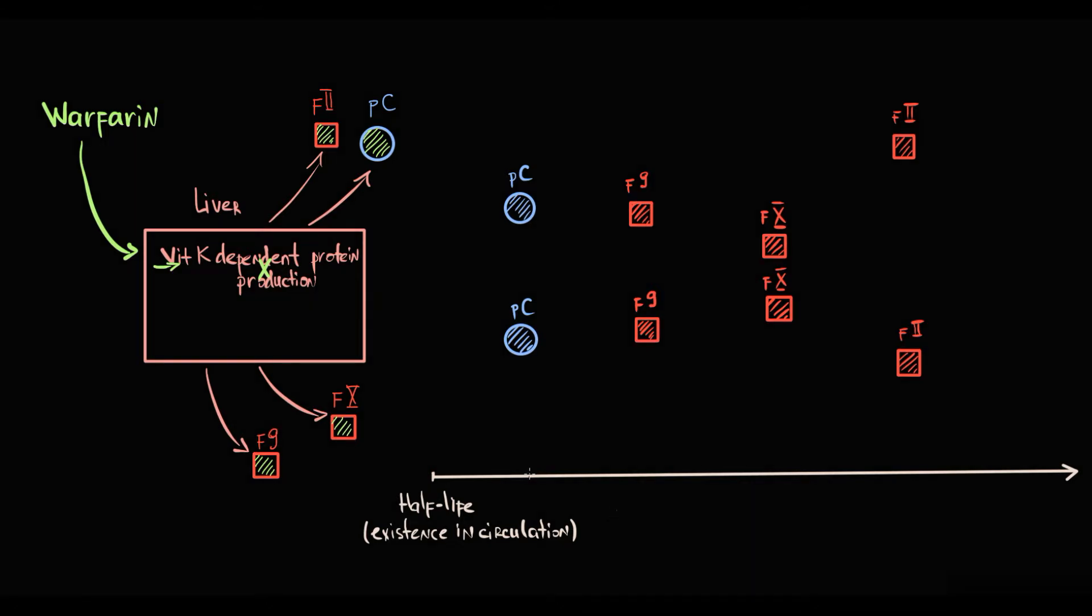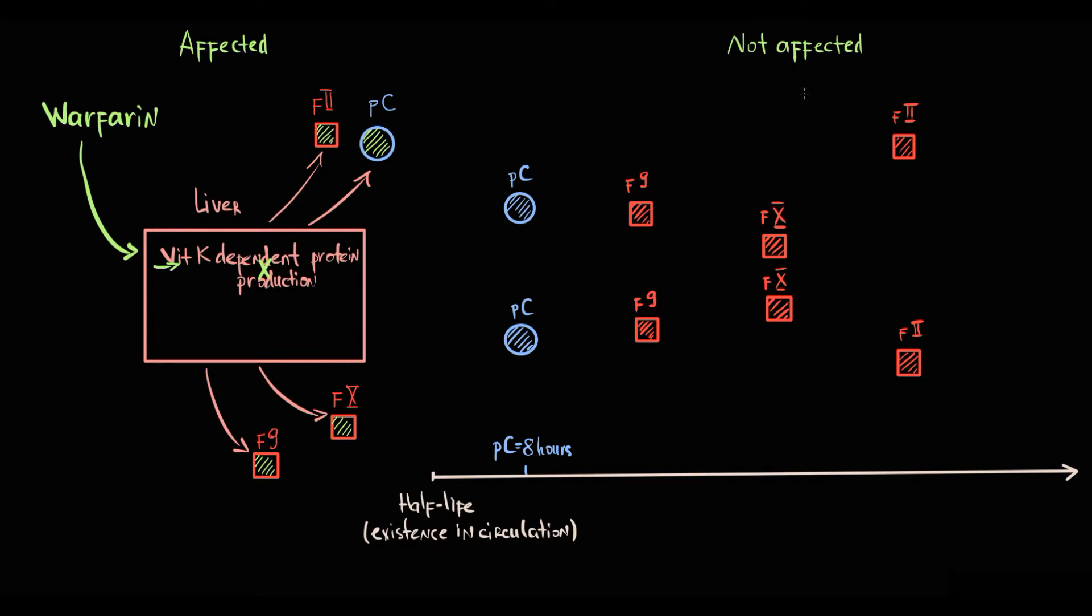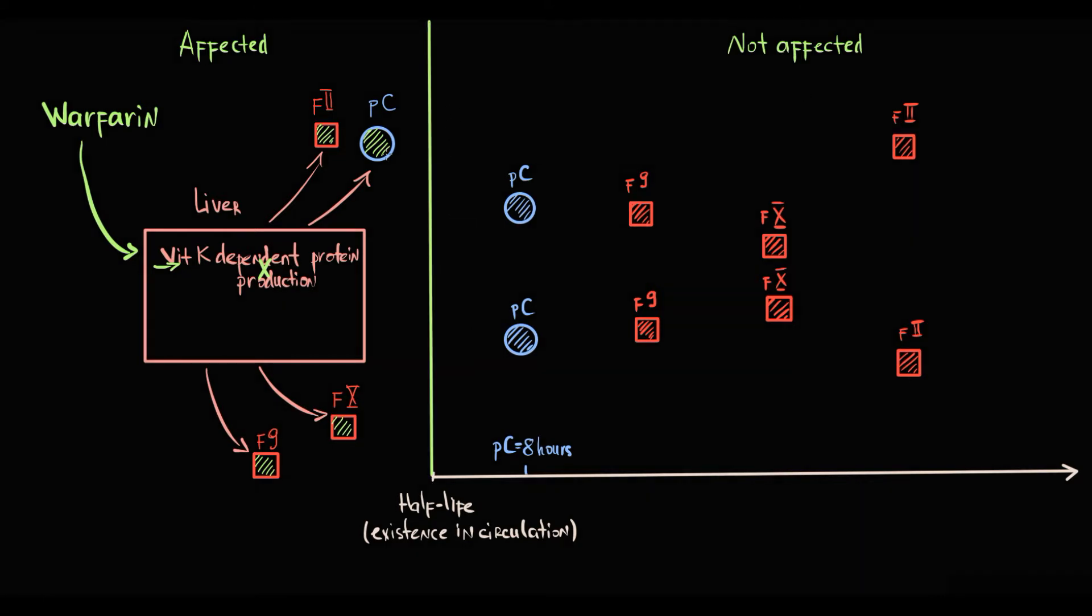But what we have to know is that warfarin acts only on synthesis of coagulation factors, but it has no effect on the functional state of factors that are already synthesized and present in the blood. So when a patient intakes warfarin, we can divide this picture in two. The functional state of factors and proteins that were produced before warfarin remains unchanged, and the factors that the liver will produce will be broken. So we can say that warfarin has no effect on the past; warfarin affects the future.